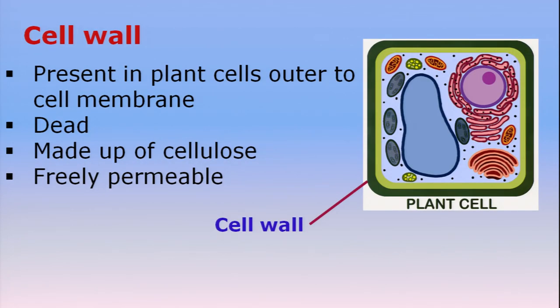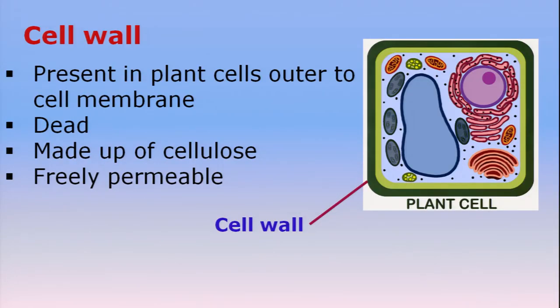Let's start with cell wall. Cell wall is present in plant cells; it's not present in animal cells. In animal cells the outermost covering is plasma membrane, but in plant cells there is an extra covering outer to the plasma membrane, and this is called cell wall. Cell wall is present not only in plant cells but also in fungal and bacterial cells.